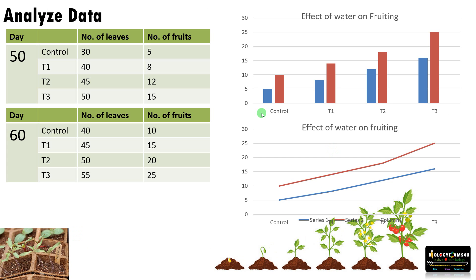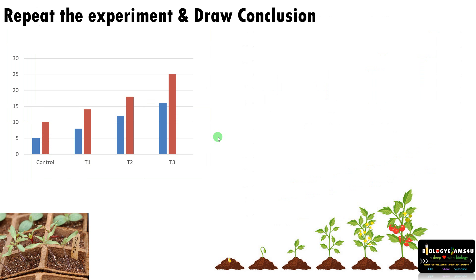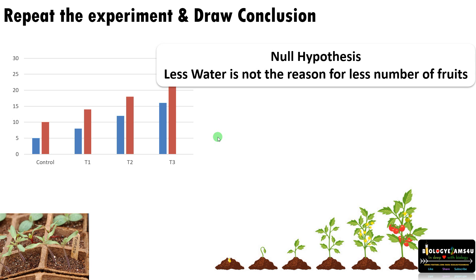Now we need to analyze the data to find the trend. We will use statistics and different software or tools to summarize the data, and prepare a graph. From the graph it is quite evident that as the amount of water increases, the number of fruits and number of leaves — the vegetative growth — is also increasing. So we have analyzed and summarized the data.